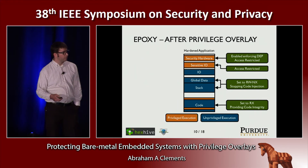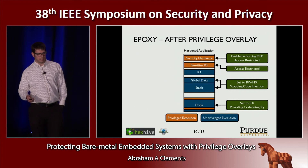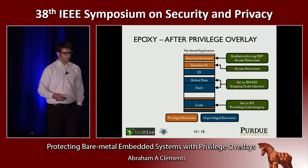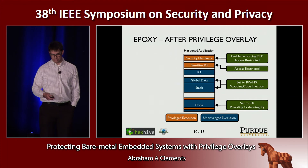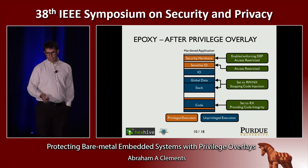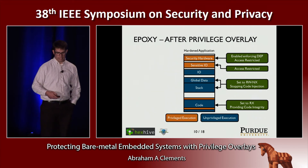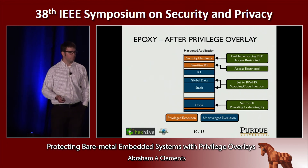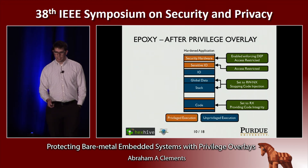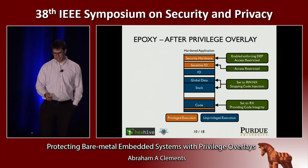After applying privilege overlaying — tying this back to desktops — we have enabled DEP, data execution prevention. Our RAM, global data, and stack are set to read/write, no-execute: you can't execute them, so code injection has been stopped. Our code is set to read/execute — it's no longer writable, providing code integrity. There are small areas which require privileges, but the rest executes unprivileged. And finally, any sensitive I/O is also restricted to privileged execution.